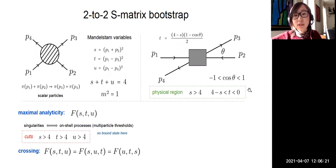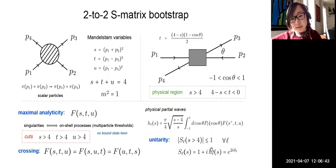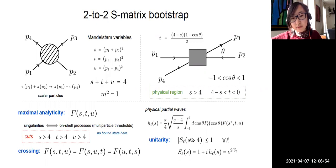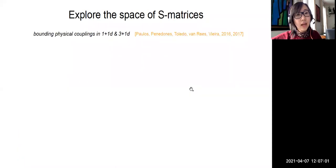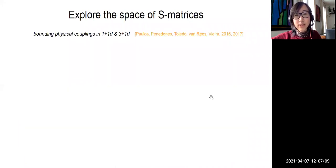The physical region is s ≥ 4 with t between 4 − s and 0. In this region, the amplitude can be projected onto angular momenta — the partial waves. Unitarity is imposed on the partial scattering amplitudes, which is related to the partial waves and to the phase shift that can be directly measured in an experiment. Unitarity says that the partial scattering amplitude for physical energy has modulus less than or equal to one for any angular momentum. Analyticity, crossing, and unitarity are the basic constraints for the 2-to-2 S-matrix.